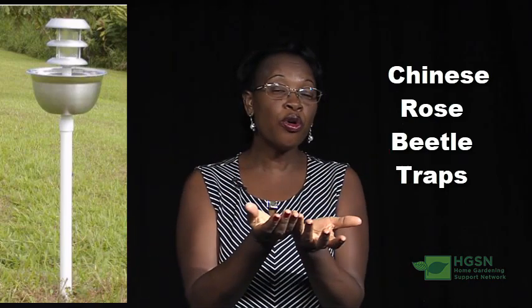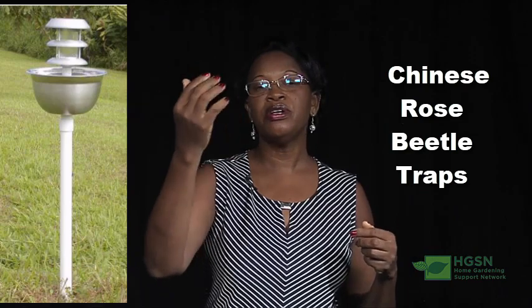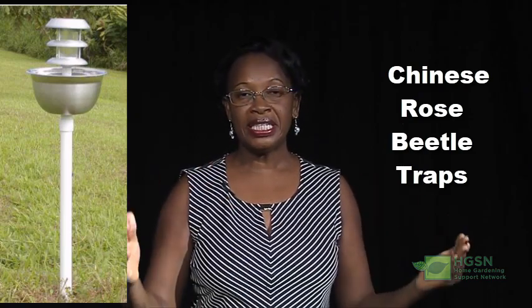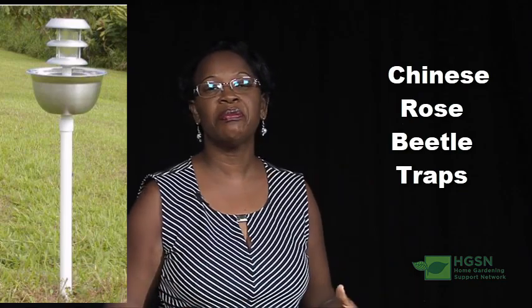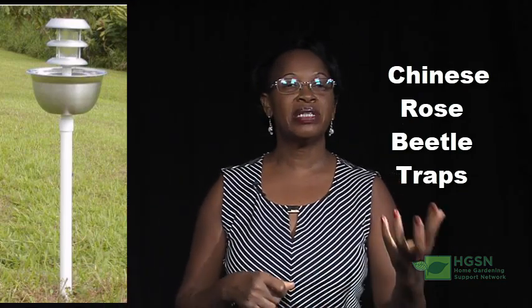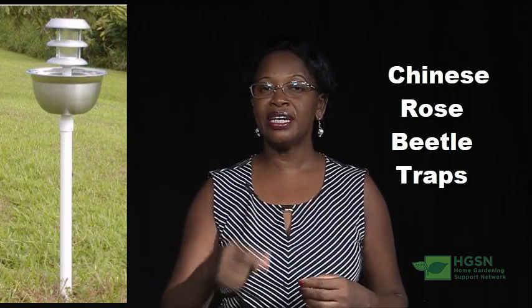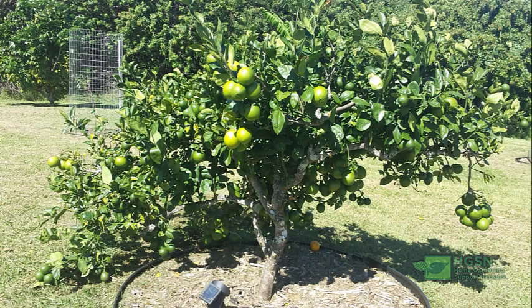You can also try using rose beetle traps, which are likely to work better for home gardeners than for areas with heavy infestations. These are constructed with a light at the top and a bowl with water. When the Chinese rose beetles rise up the trap, they fall into the bowl of water. These are available at the garden center. Place them where the Chinese rose beetles are affecting the plants — for instance, next to your rose plants so the beetles are attracted to the lights and fall into the bowl of soapy water. I have a home gardener who placed these lights across all his citrus seedlings and it really worked.